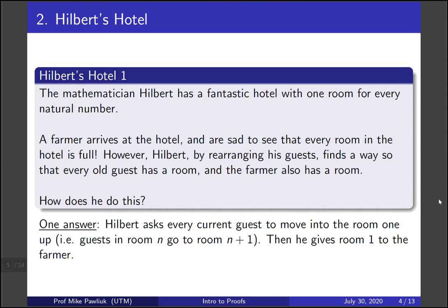So one possible answer is that Hilbert asks every current guest to move into the room that's one up. So if you're in room n, you go to room n plus one. That will free up room one for the farmer. Now think to yourself, does the farmer have a room? Yes, they have room one.